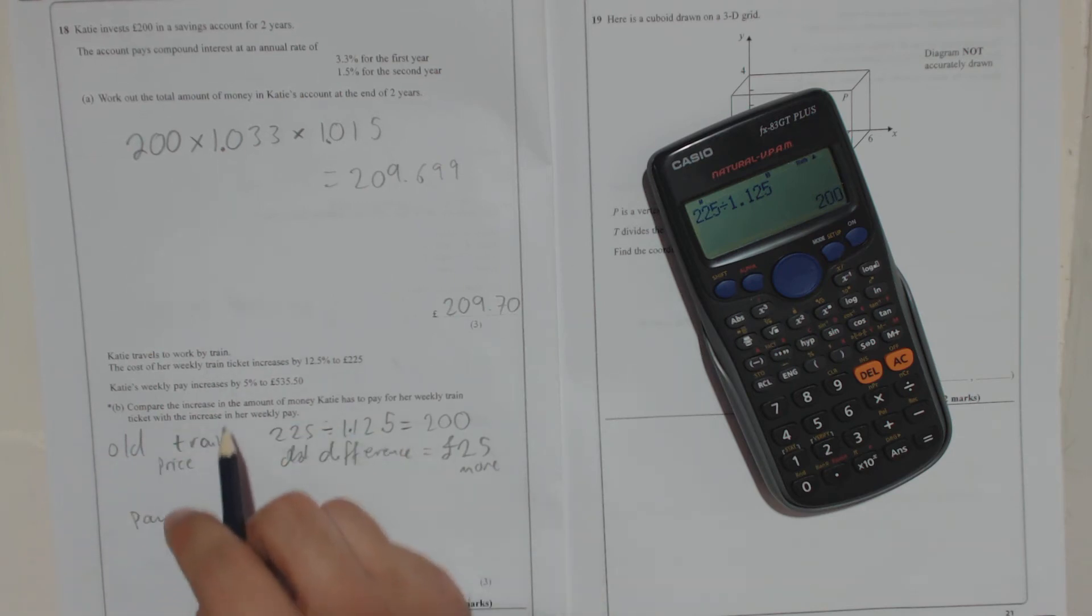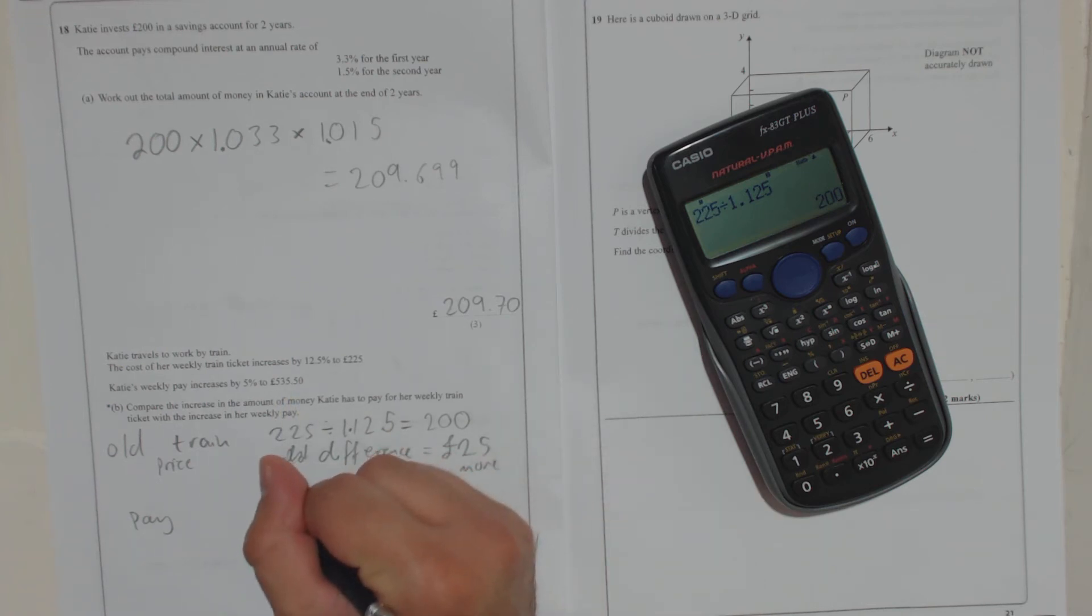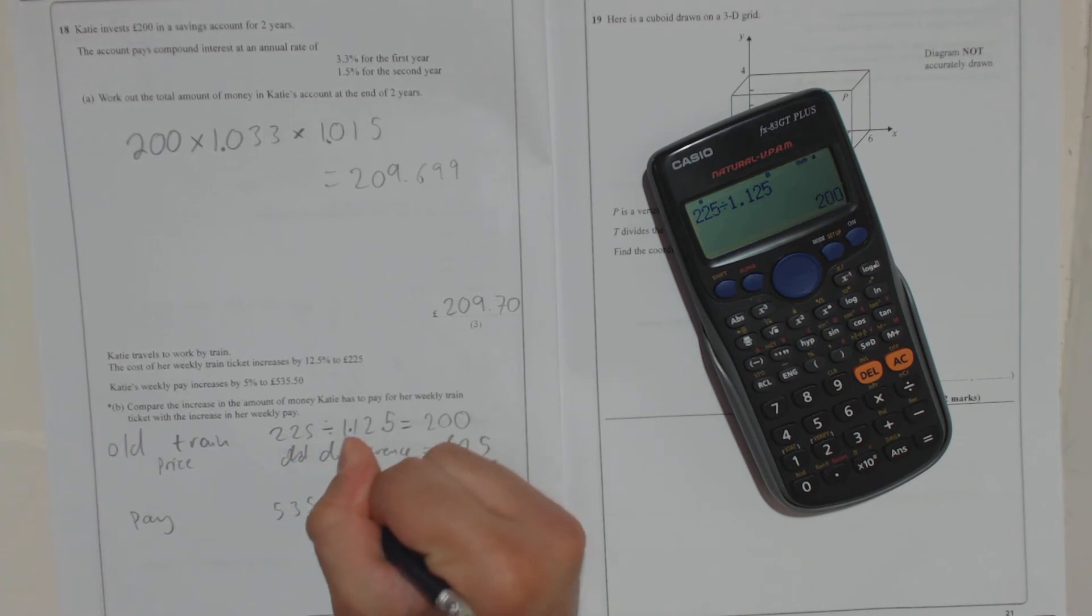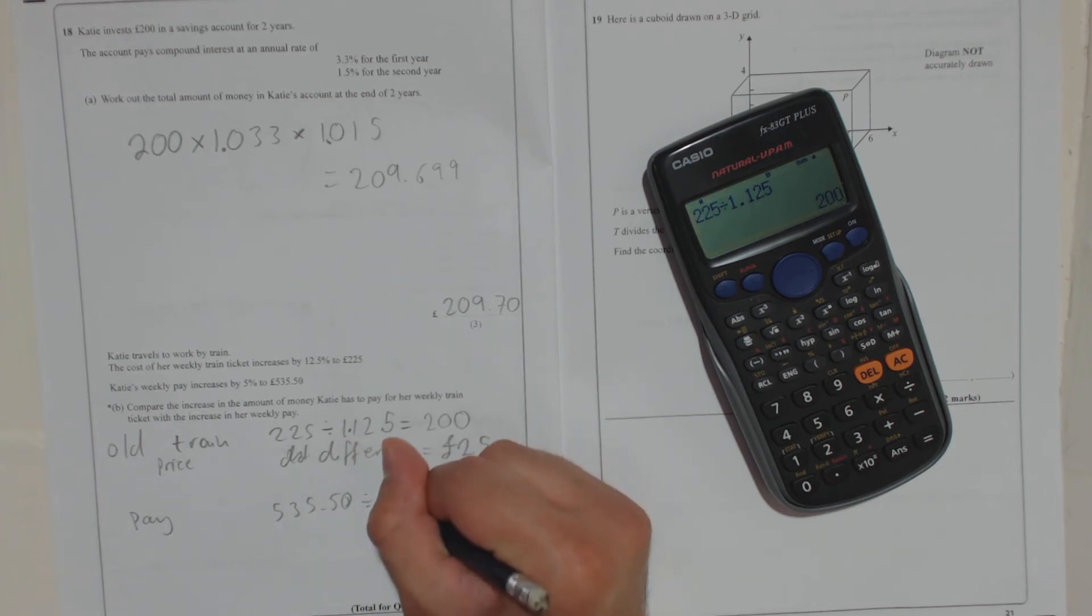So it's increased by 5% to 535 pound and 50. So I'm going to take 535 pound 50. So remember, whatever it used to be, it was increased by 5%. So it would have been multiplied by 100 plus 5, which is 105.